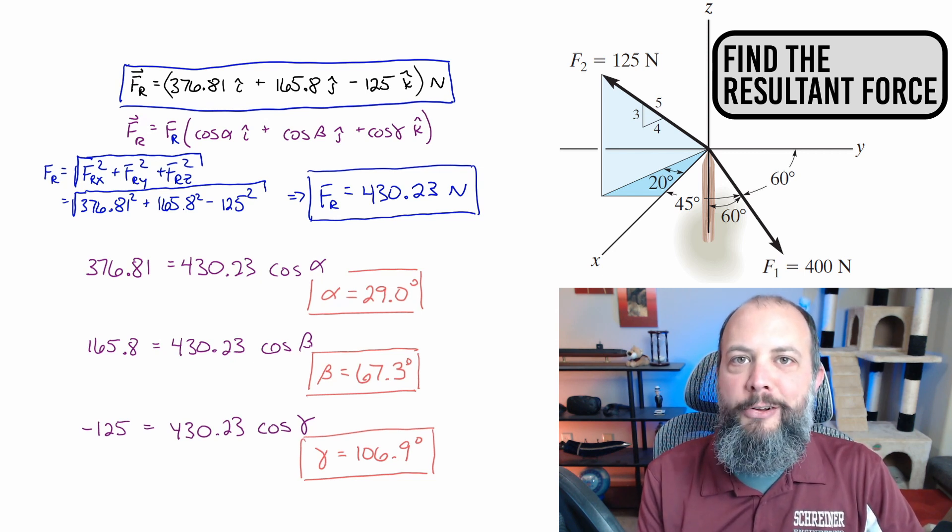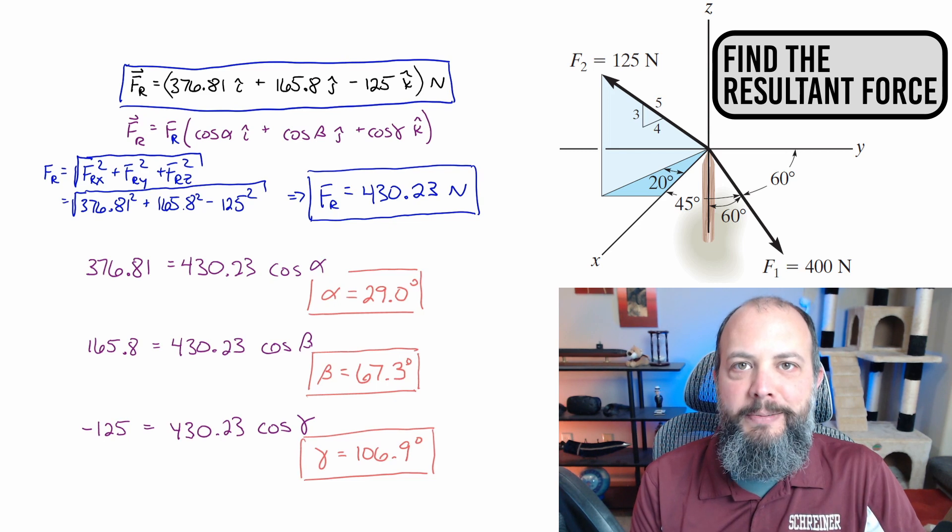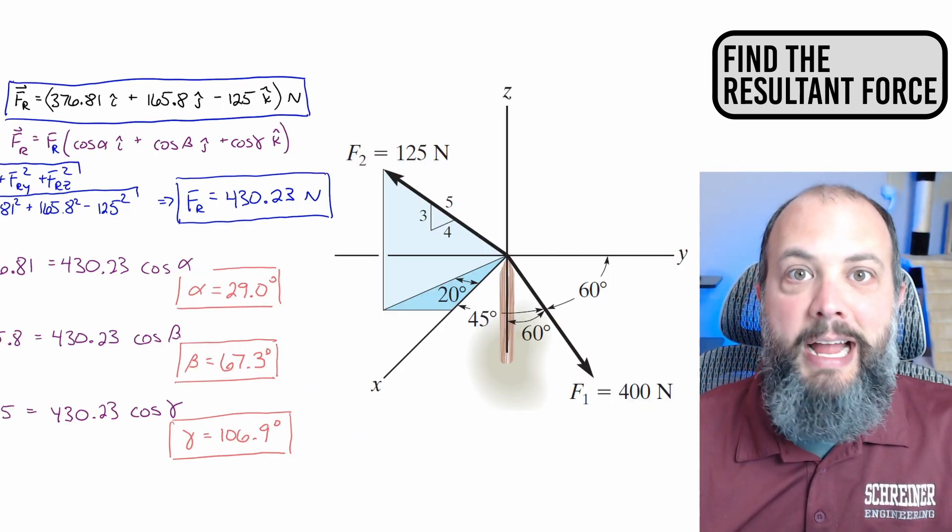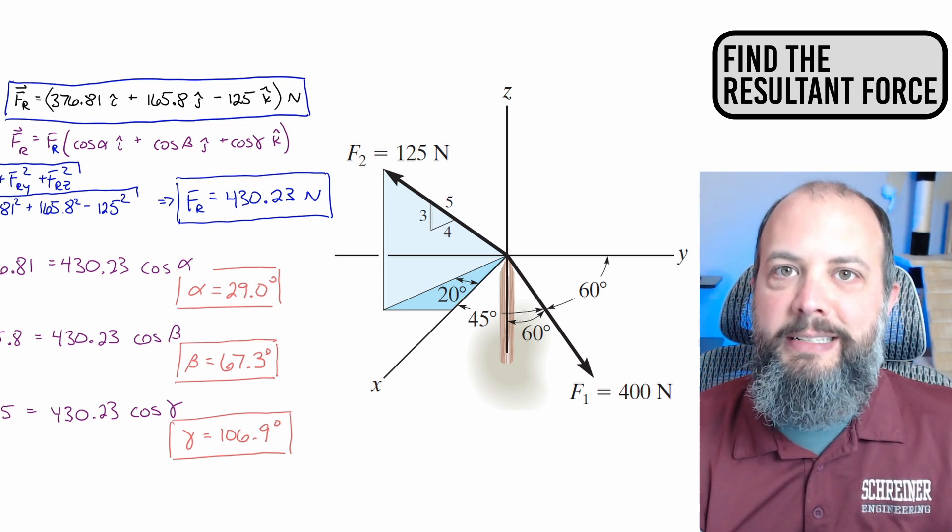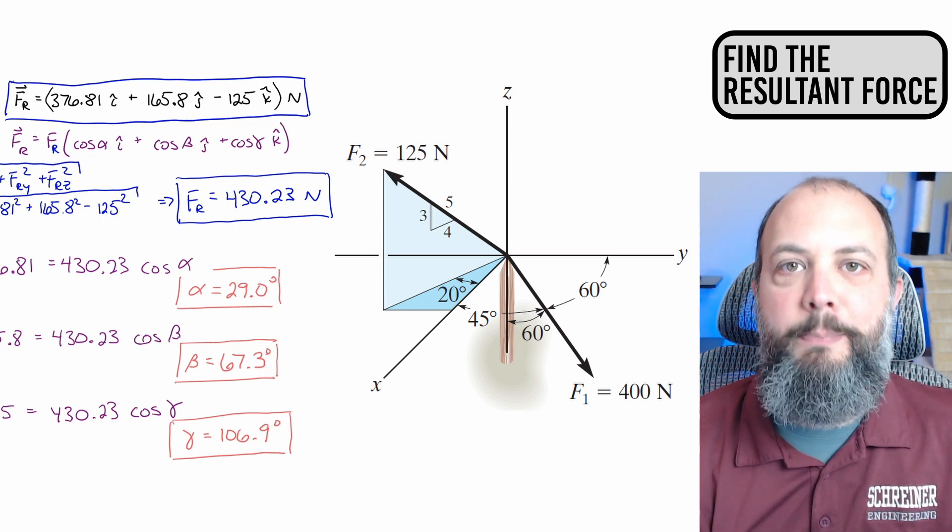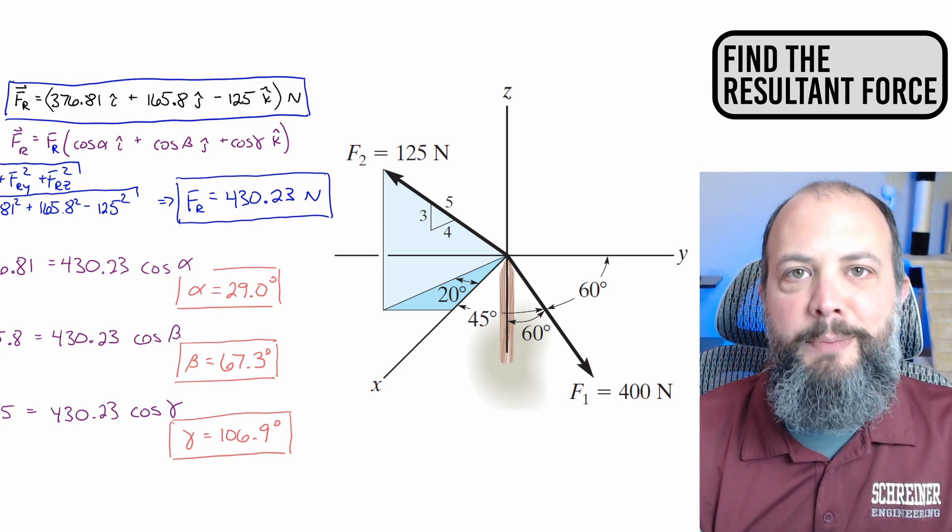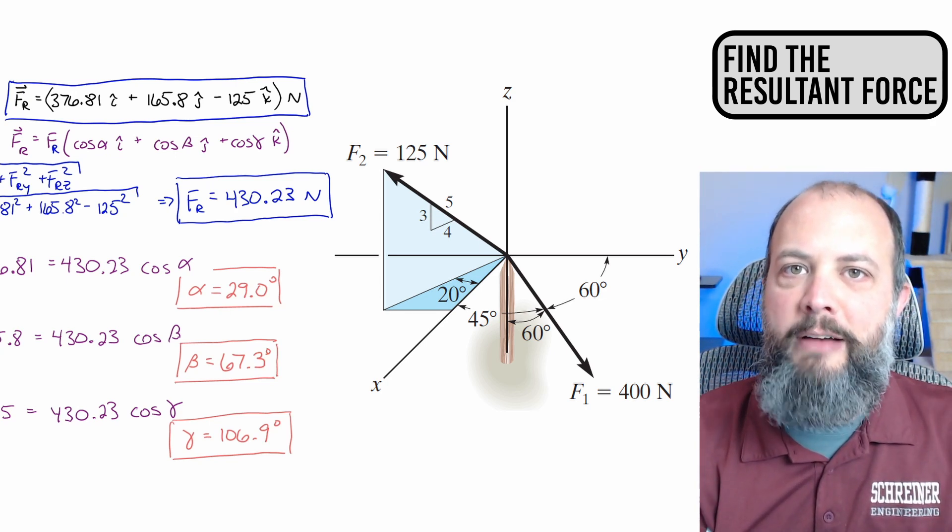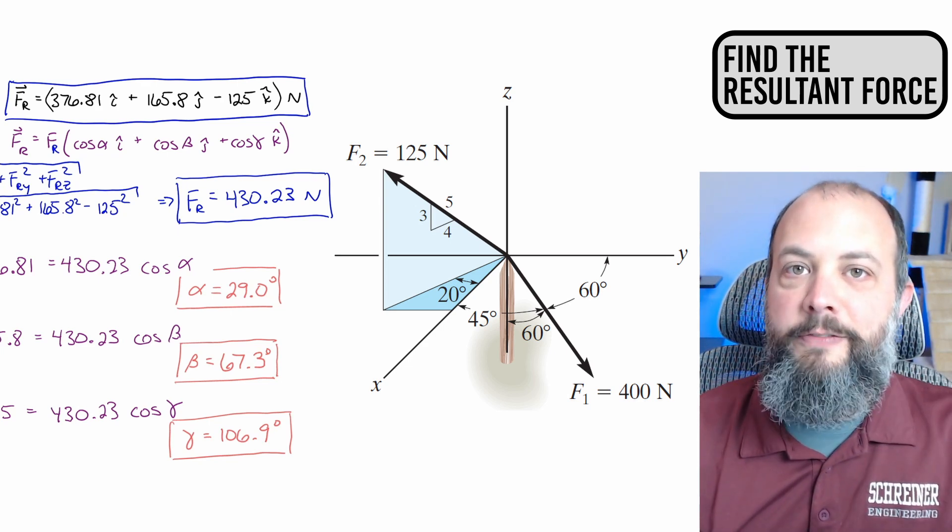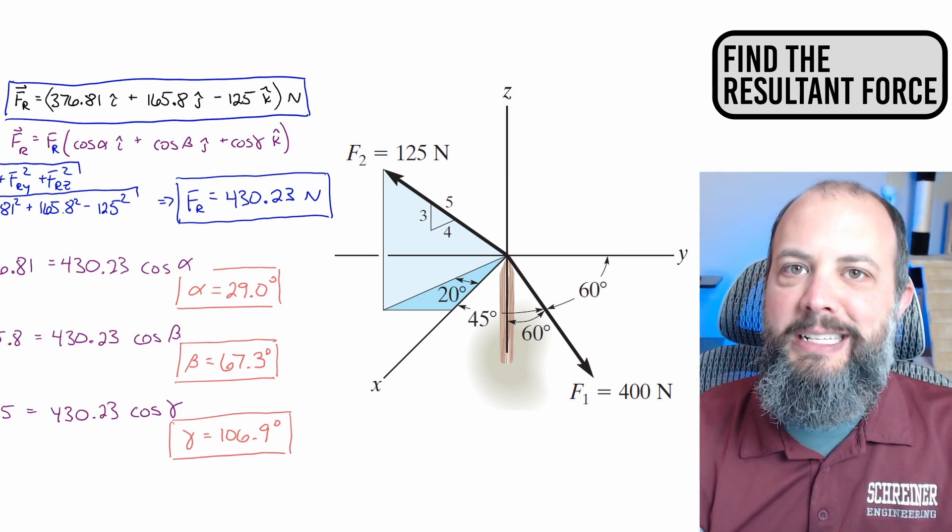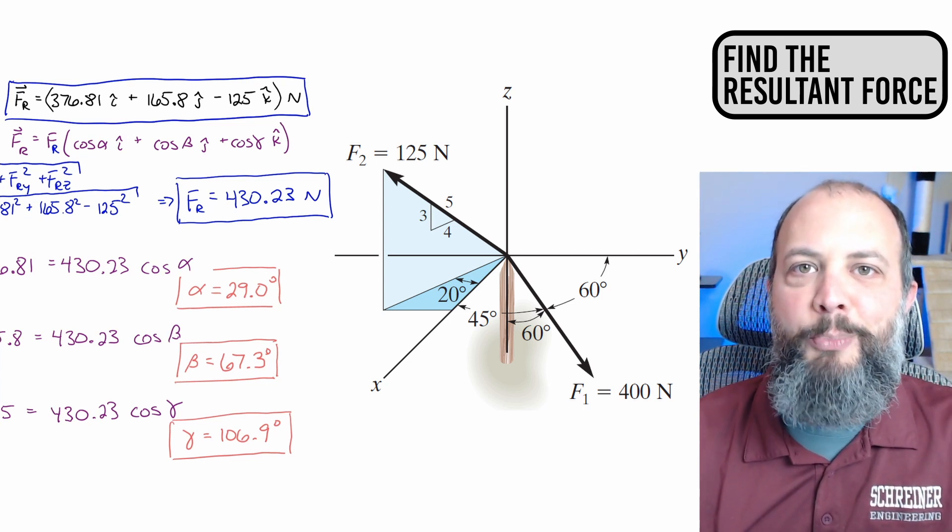And the gamma angle is greater than 90 degrees, meaning it's pointing down below the XY plane into the negative Z direction. And looking back at the initial figure to see if this final answer actually does make sense, we got an answer with the highest term in the positive X direction, which makes sense since both F1 and F2 are both pointing in the positive X direction. We got an answer that's positive Y, but a small number in the positive Y direction, which again makes sense because F1 is larger than F2. So F1 is pulling more in the positive Y direction than F2 is pulling negative Y. And the final answer being negative in the Z direction also makes sense because again, F1 is larger than F2. So the negative Z component of F1 is overwhelming the positive Z component of F2.